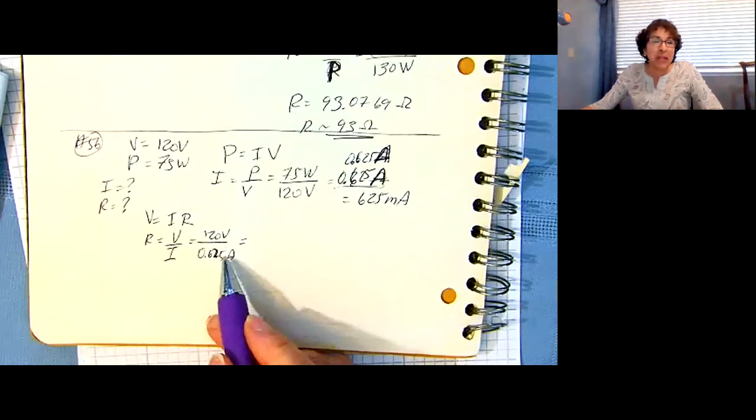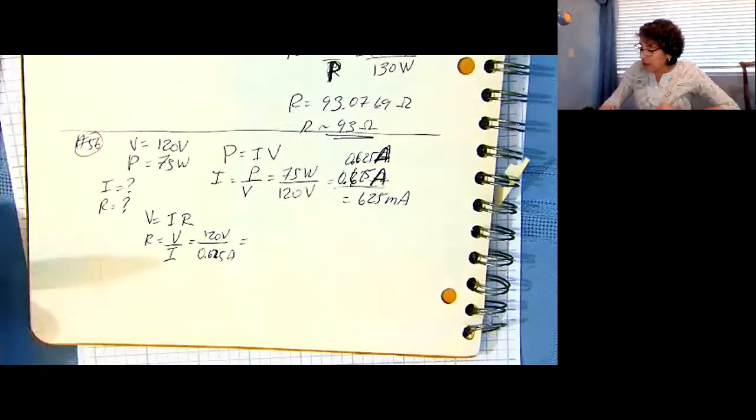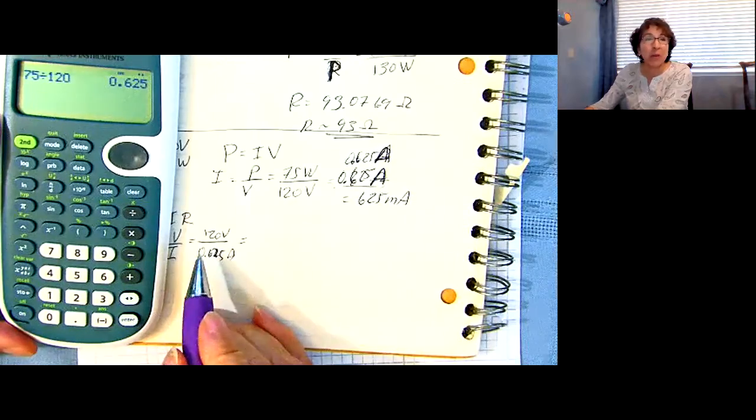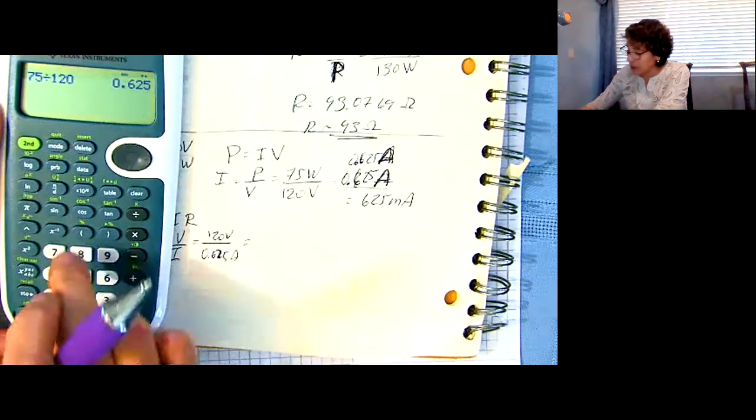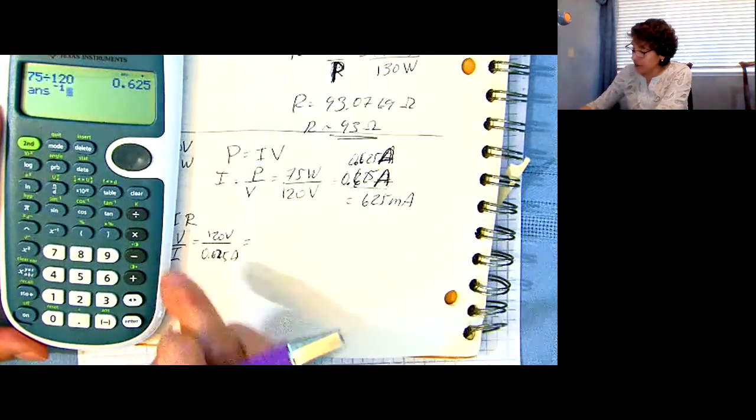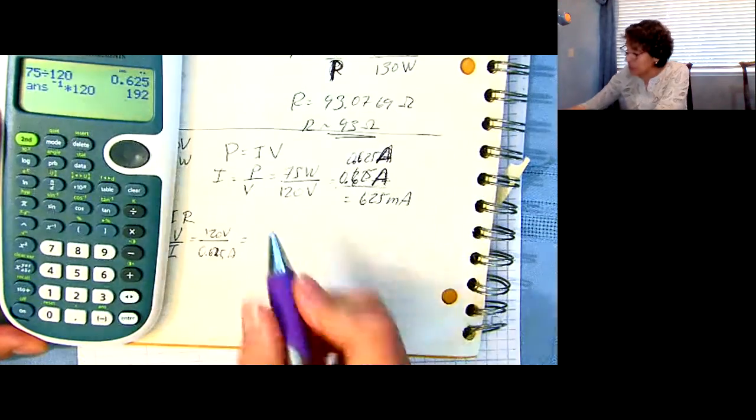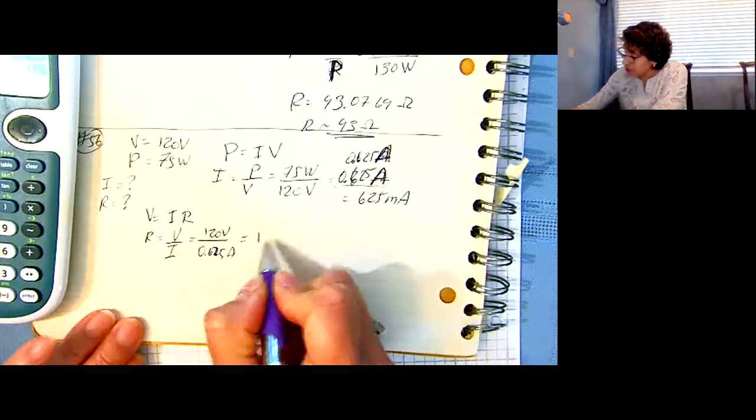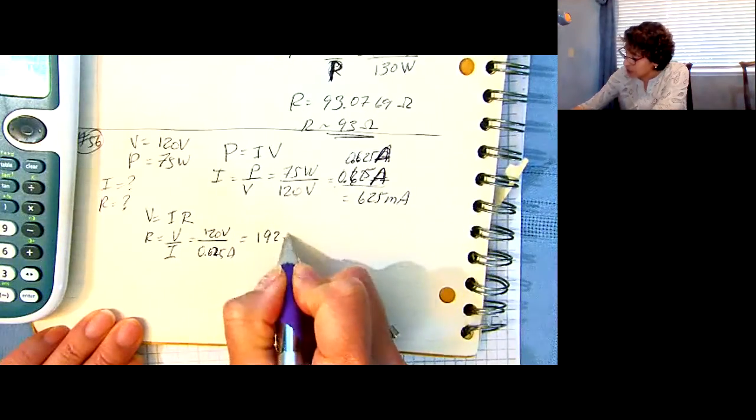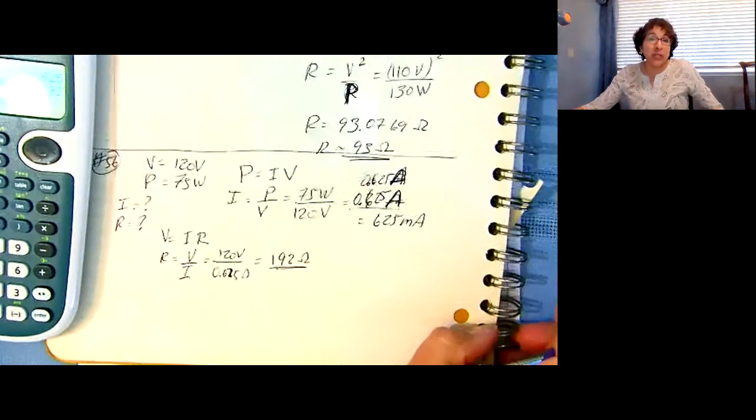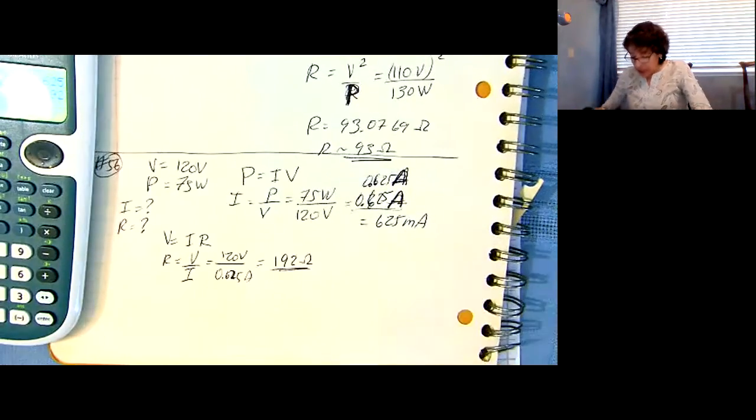And notice how I made my mistake, my units aren't working. I still have it in my calculator, it's in the denominator here, so I'm going to invert it, give me one over that, times 120, there we go, 192, and that is ohms, 192 ohms. And that's all there is to it.